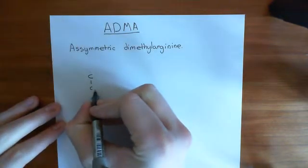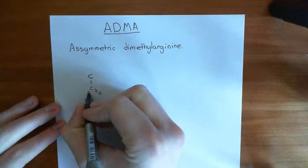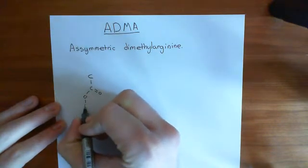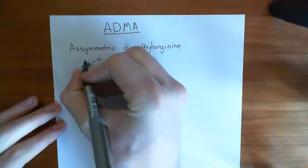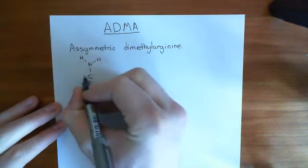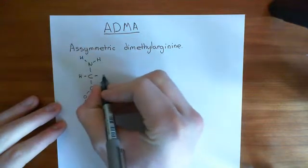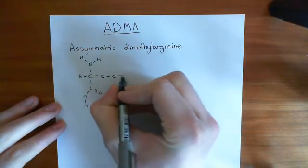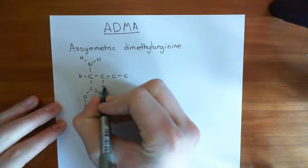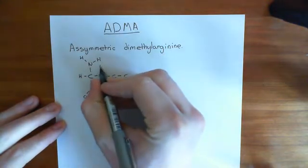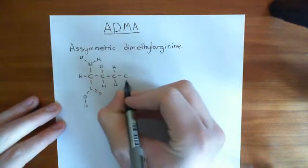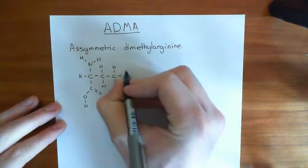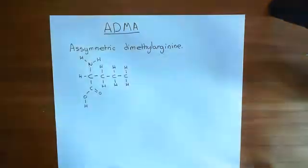Let's start off with the typical amino acid structure — here's the alpha carbon with the carboxylic acid group coming off here, then the amino group coming off the alpha carbon, and a hydrogen coming off the alpha carbon. Here's the R group of asymmetric dimethyl arginine, and it's very similar to arginine — it needs to be an analog of arginine, the substrate for the nitric oxide synthase enzymes.